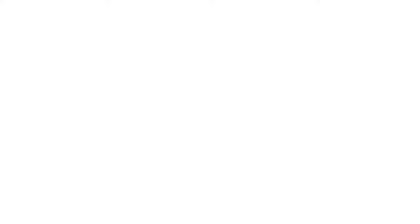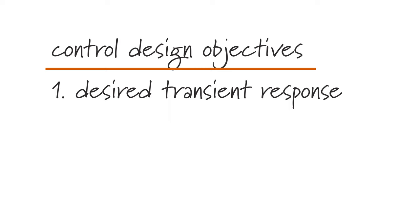When designing a control system, the designer typically has three objectives in mind. The system should have a desired transient performance, such as heating the room to the desired temperature within a certain amount of time. It may be required to exhibit a desired steady-state output, such as maintaining the water level in the toilet at the correct level. And, most importantly, the system must be stable.